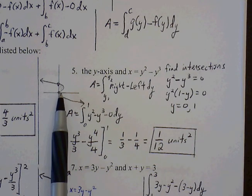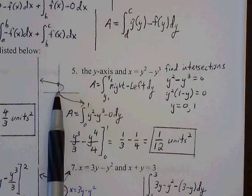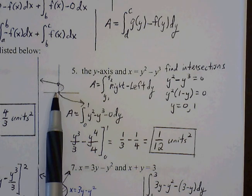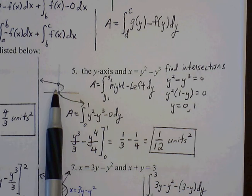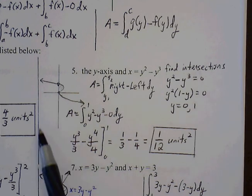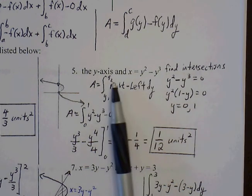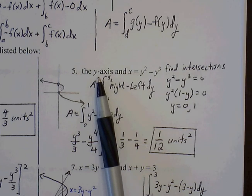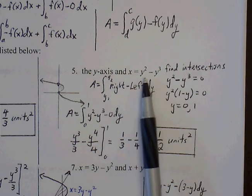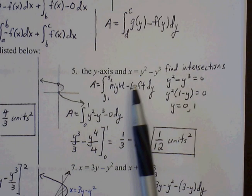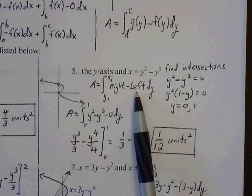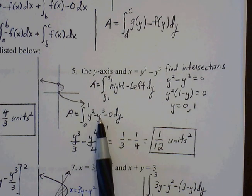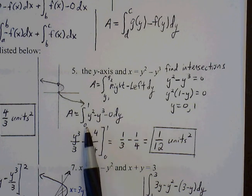And so the two graphs are set up so that we have a right graph and a left graph. So we have to do right minus left. Everything will have to be in terms of y. So x equals 0, that's the first equation. And the second equation is x equals y squared minus y cubed. The right curve in this instance is y squared minus y cubed. The left curve is 0. So y squared minus y cubed minus 0. And we also need to find the intersections.